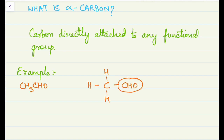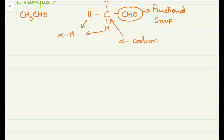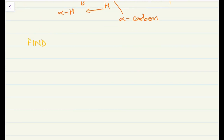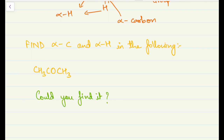In CH₃CHO, the CHO is the functional group, so the carbon directly attached to CHO becomes alpha carbon, and the hydrogens attached to this alpha carbon become alpha hydrogen. Now we have a question for you: find the alpha carbon and alpha hydrogen in CH₃COCH₃, also called acetone. Could you solve it?